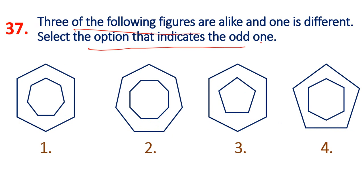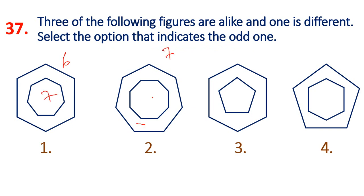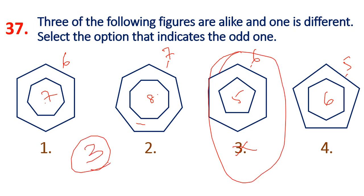Question 37: Find the odd figure out of four figures. The pattern involves size and back orientation. One figure has size 7 with back 8, another has size 6 with back 5. The odd one out doesn't follow the pattern. Option 3 is the answer.